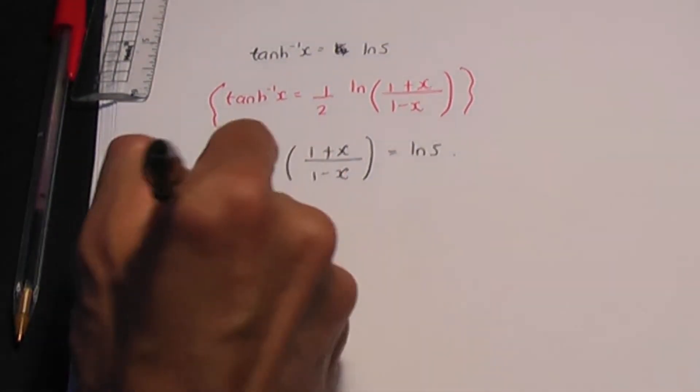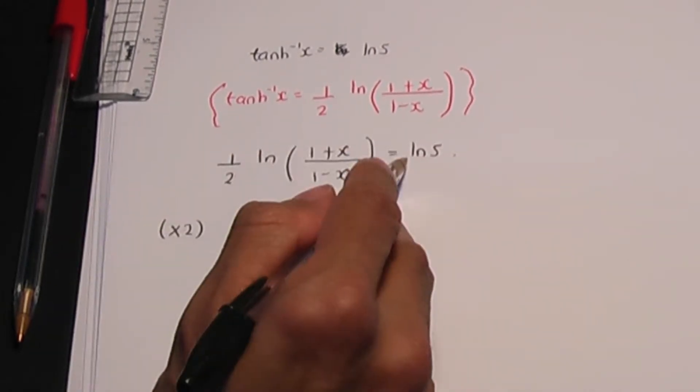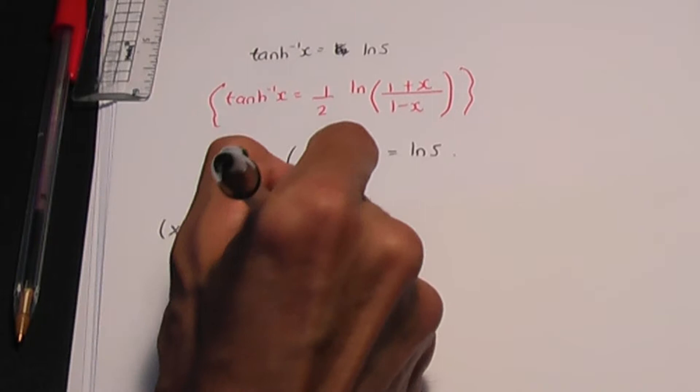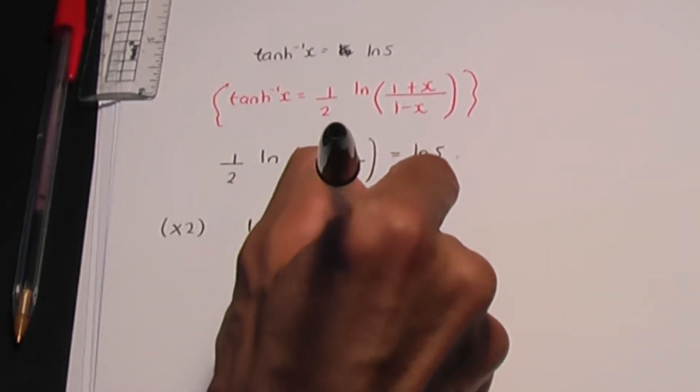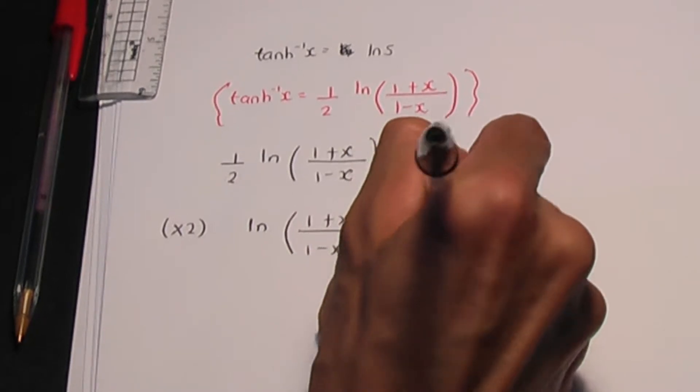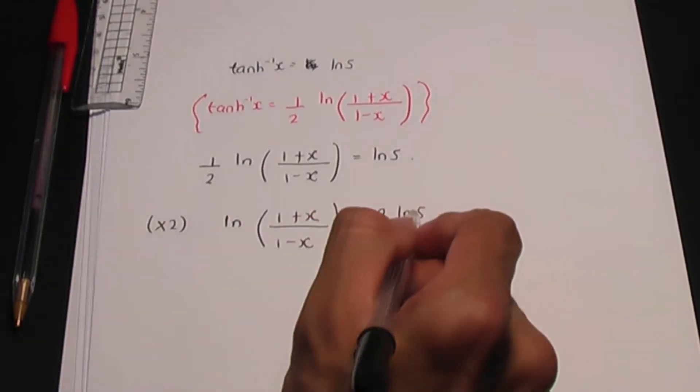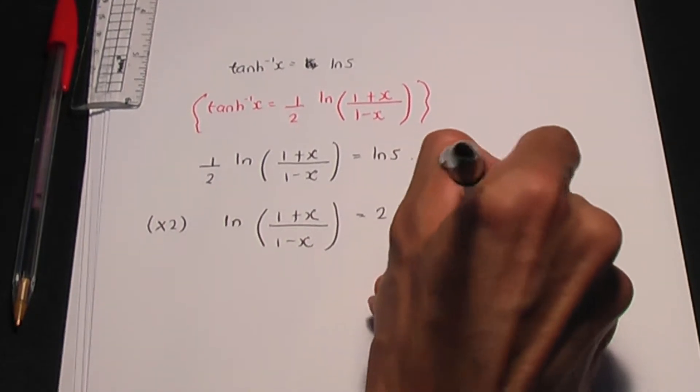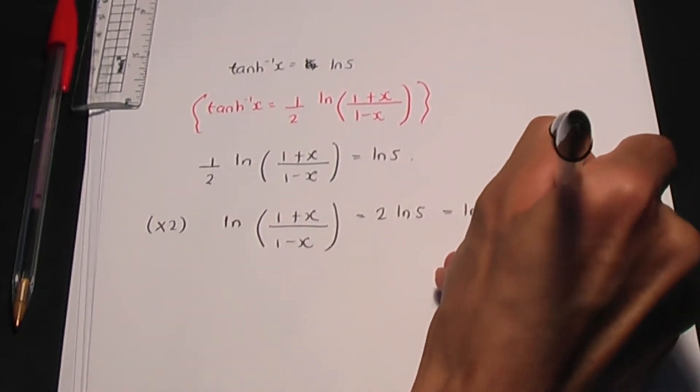Now, let me multiply both sides by 2. So if I multiply both sides by 2, I'll get ln of 1 plus x over 1 minus x, that is equal to 2 ln 5. And 2 ln 5 is the same as ln 5 squared, which is ln 25.